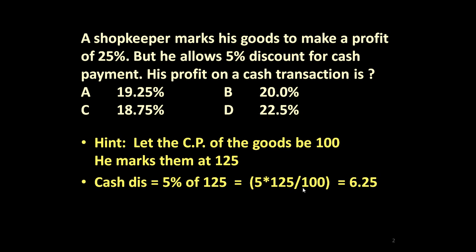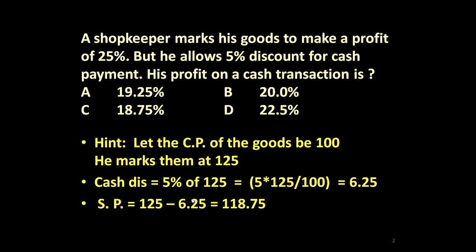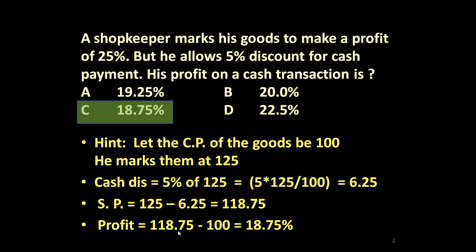5 into 125 divided by 100 equals rupees 6.25. So he offers a discount of rupees 6.25 on the marked price of rupees 125. The sale price of the goods will be 125 minus 6.25, which equals rupees 118.75.